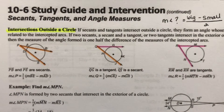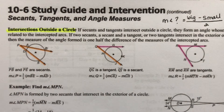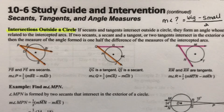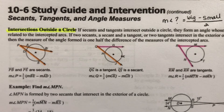This is video number two. We're still talking about secant lines and tangent lines intersecting. In the previous video, we talked about when they intersect either inside a circle or touching a circle, and now we're going to talk about how we figure out measures of angles when the lines intersect outside of the circle.